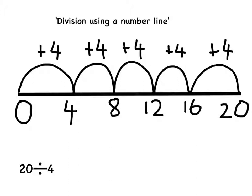Now you can count up the jumps, which will tell you the number of times that 4 is in 20. So let's count the jumps. There are 1, 2, 3, 4, 5 jumps.